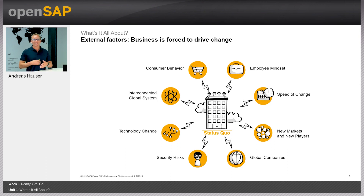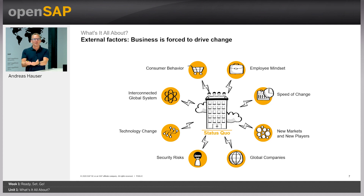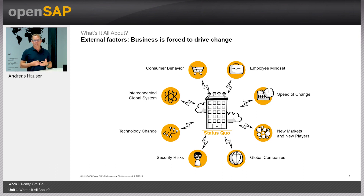Technology changes every year — new technology is constantly coming up. There are also many interconnected global systems, meaning customers work with their customers and partners, and companies team up in completely different ways. And finally, consumer behavior has shifted. Before the pandemic, you went into shops and stores. When you couldn't get out, you went to online shops instead, and consumer behavior changed overnight. There are many cases where consumer behavior changes significantly — all external factors impacting your business.